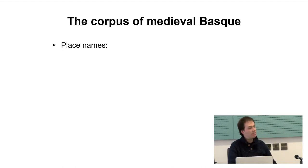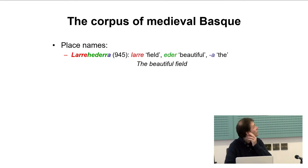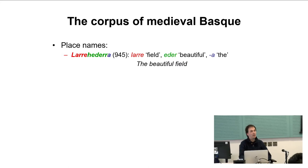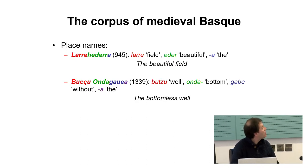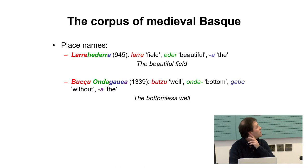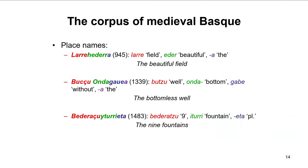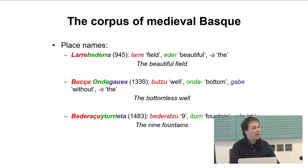So what do these place and person names look like? I have gathered a few examples to show what kind of linguistic evidence they offer. This one we have — 'beautiful field' — is a place name with an adjectival noun phrase. This one is similar but has a postpositional phrase with 'gabe', where 'putzu on the gabe' would stand for 'the bottomless pit or well'. We also have phrases such as 'bederatzi' meaning 'the nine fountains'.